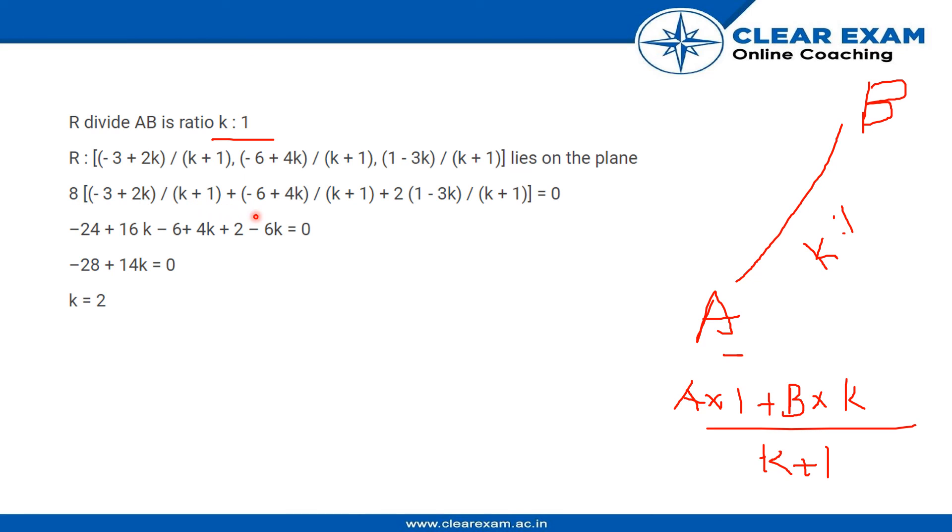times this plus 1 times this plus 2 times this is equal to 0, and once we simplify enough, we get the value of K to be equal to 2. Thank you.